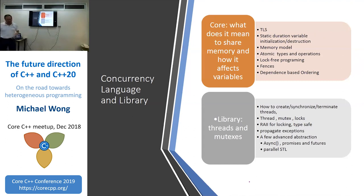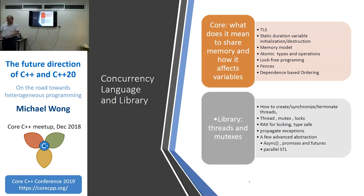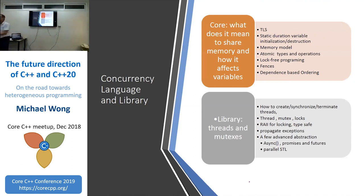We ended up separating the feature wall and the library. Even some things in the library, like atomic types and operations, are implemented using core language features. This is because if your machine type has load-linked store-conditional or compare-and-swap on x86, you implement your atomics using those instructions, and you can only dispatch those from the compiler, not from a library.